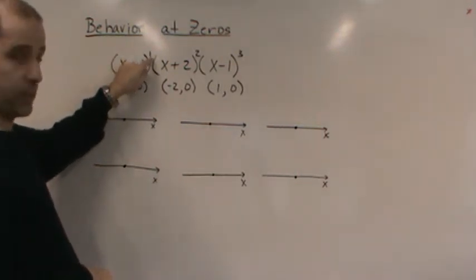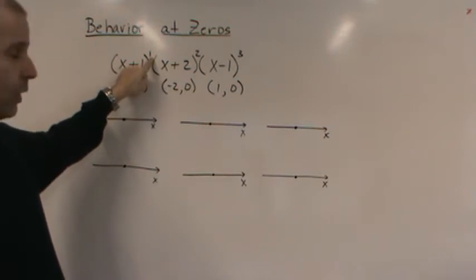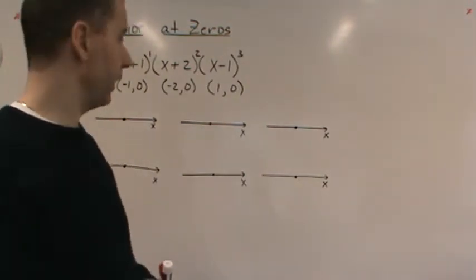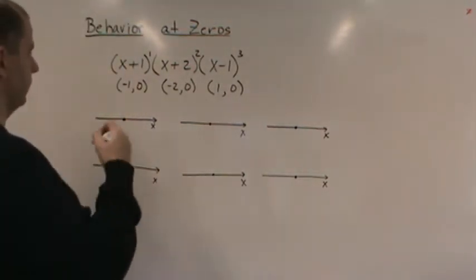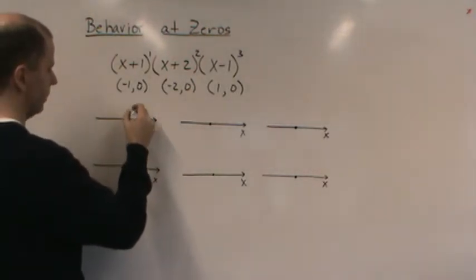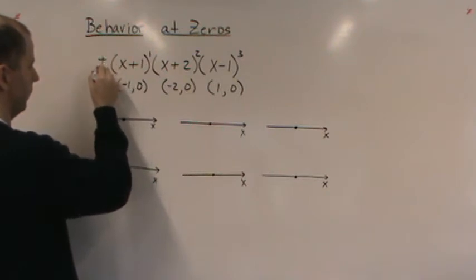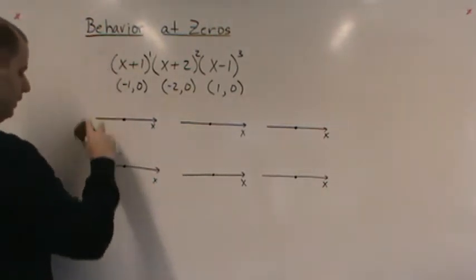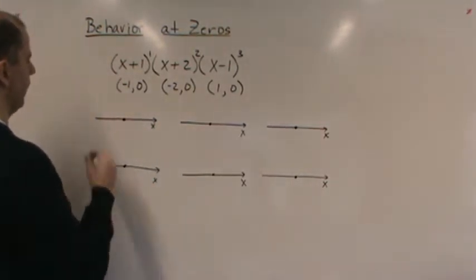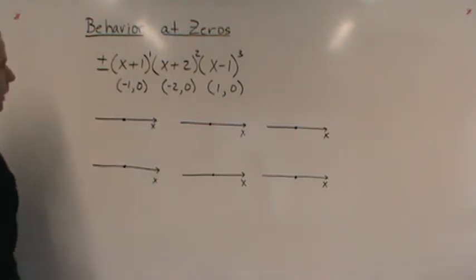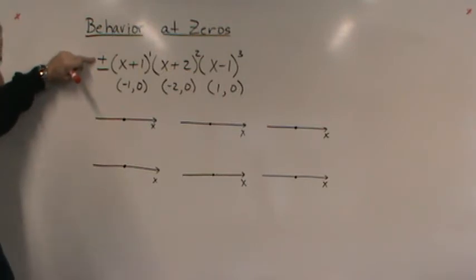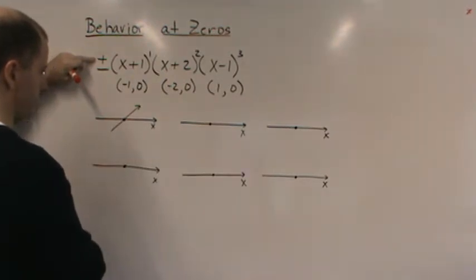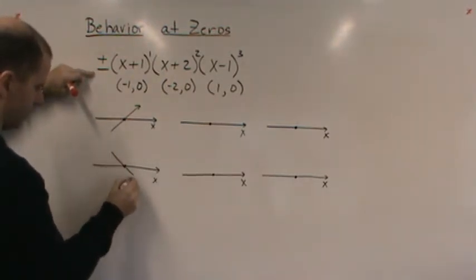When a factor has a multiplicity of one — meaning the exponent is one — it's going to cross the x-axis. Whether the crossing has a positive or negative slope depends on the sign of the leading coefficient. If it's positive, it crosses with a general positive slope. If it's negative, it crosses going the other way.